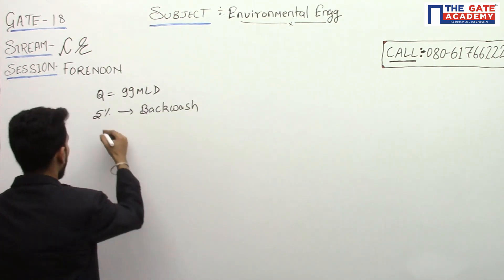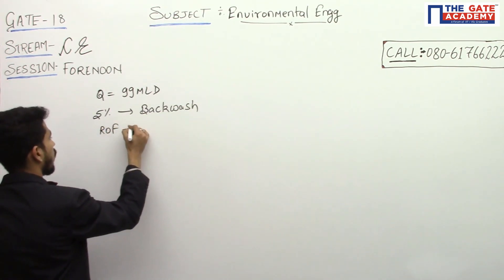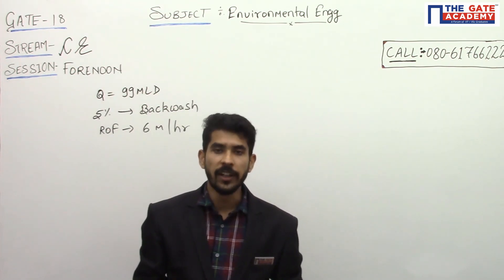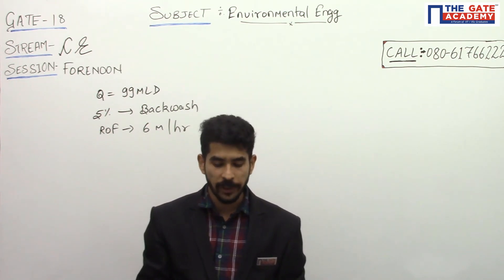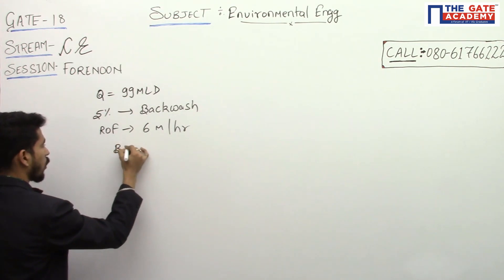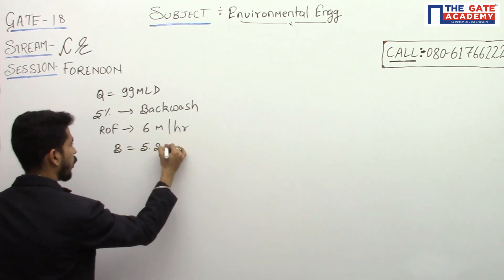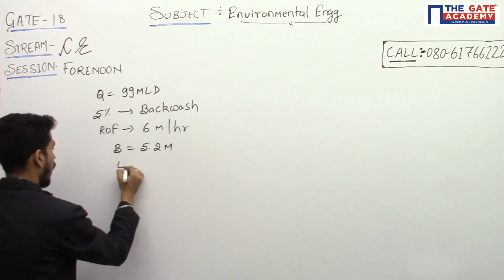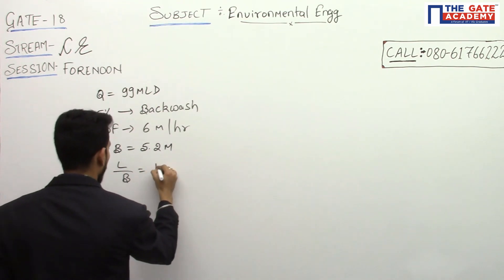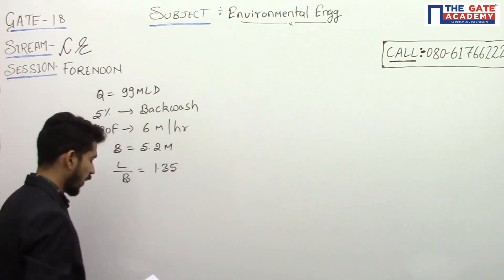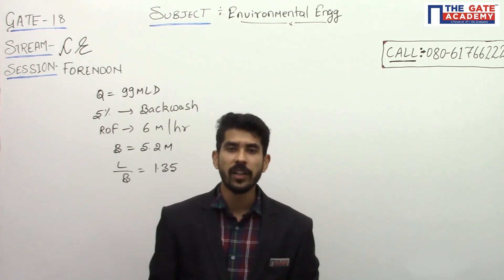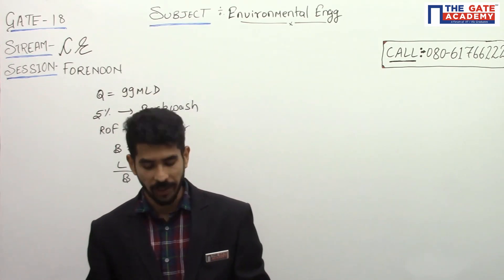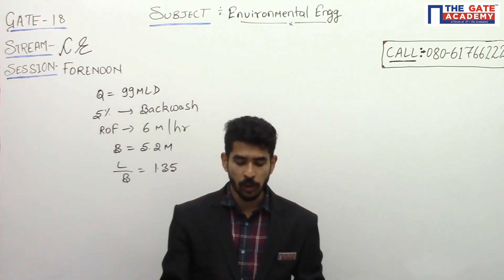The rate of filtration is 6 meters per hour. The width of each filter is limited to 5.2 meters, so W equals 5.2 meters. The length to width ratio L by W is equal to 1.35. An extra filter has to be provided in case of any breakdown, so for safety we have to provide an extra standby filter.